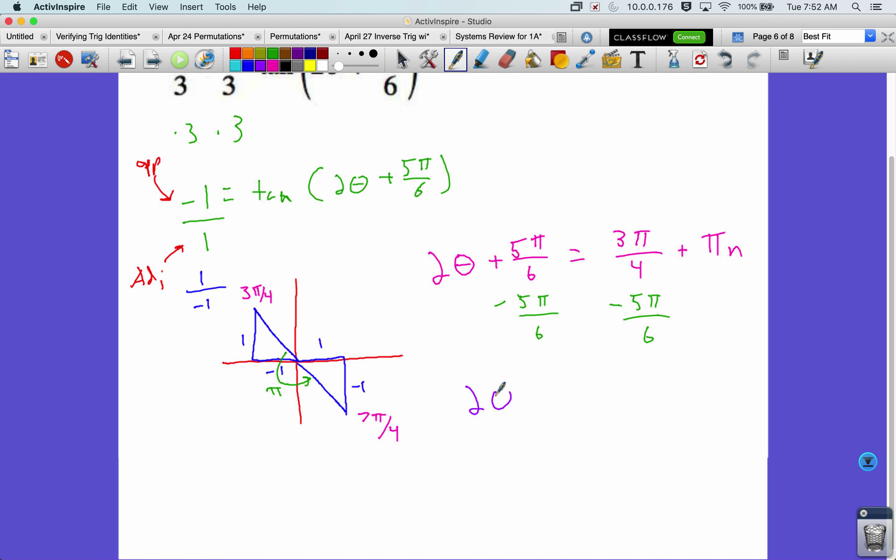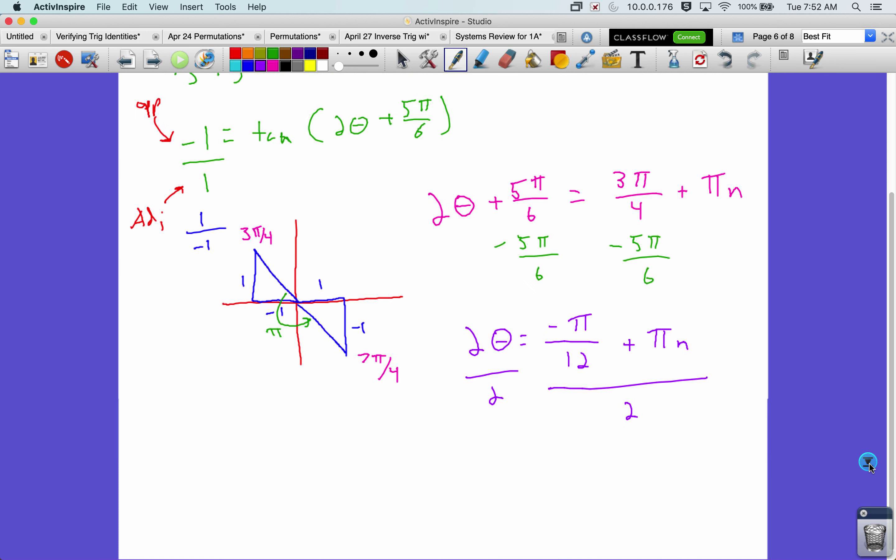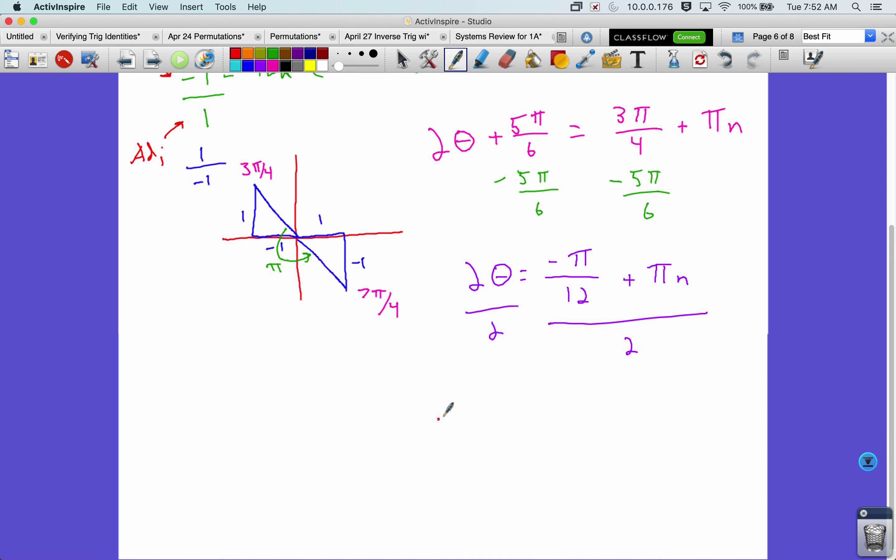So, now we've got 2 theta equals negative pi over 12 plus pi n. And I'm going to divide everything by 2. Or you can think of it as multiplying by 1 half. So, theta equals negative pi over 24 plus pi n over 2. And hopefully, somewhere on our paper is still our definition of n. n is an element of the integers.